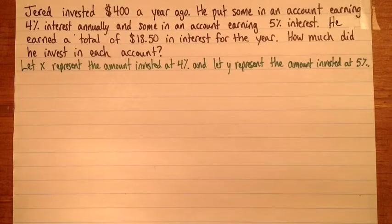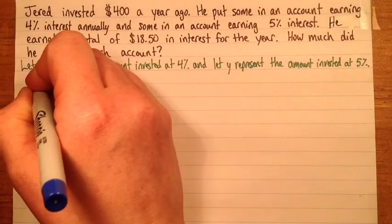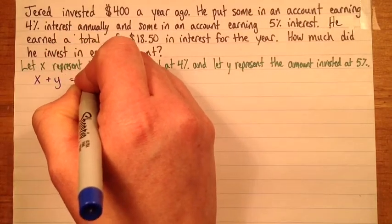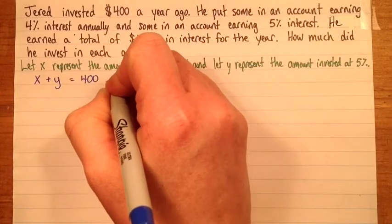Okay, now what do we know about these two amounts? Well, we know that altogether it's $400. So our first equation can say that altogether it's $400. So X plus Y equals 400, and that can be equation 1.